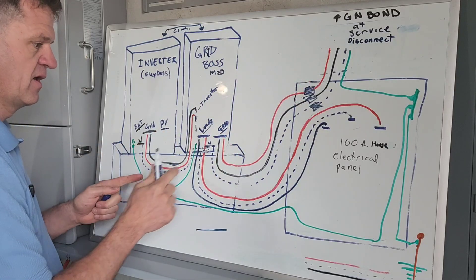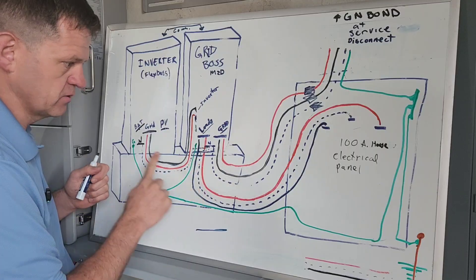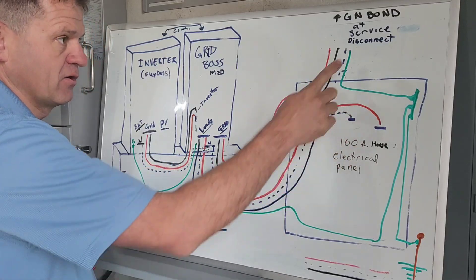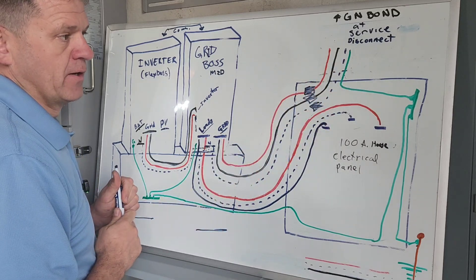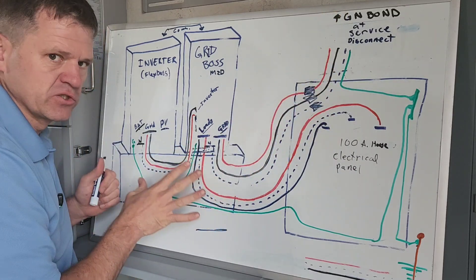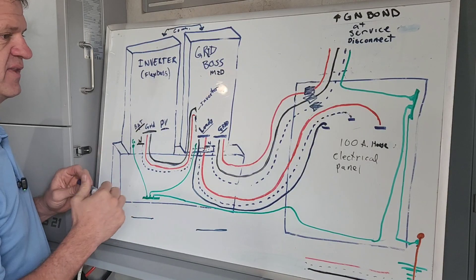These connections go all the way out and it sees this ground-neutral bond connection. So these have continuity here. So because all the neutrals are all connected together, and my grounds are all connected together, they are all connected through that one ground-neutral bond. So I don't need to make like an extra ground-neutral bond as part of that. So if you are using your Grid Boss as your service disconnect, there are some jumpers where you can add the ground-neutral bond into the Grid Boss.